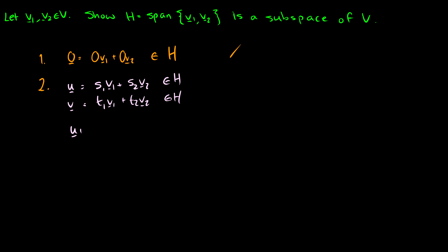U plus V equals (S1 + T1)·V1 plus (S2 + T2)·V2. We know this is in H because this vector is in the span, and H is the span. Therefore U plus V is in the subspace, so the second condition holds.